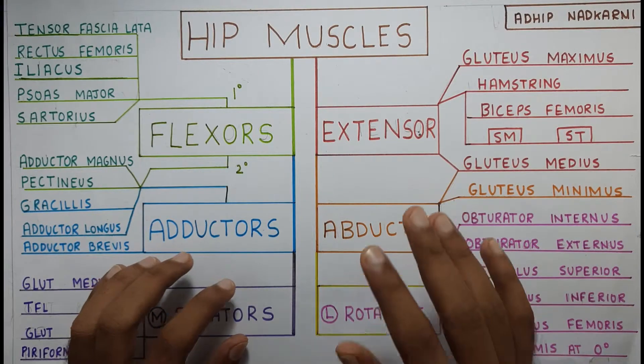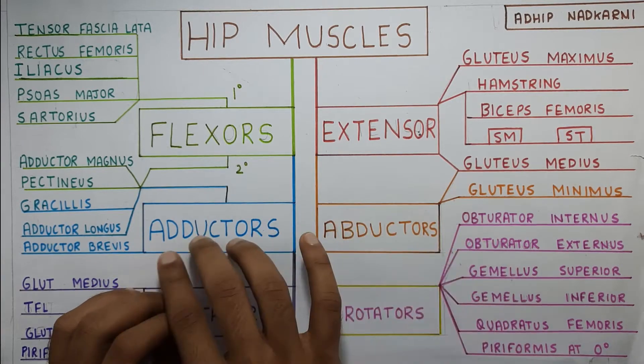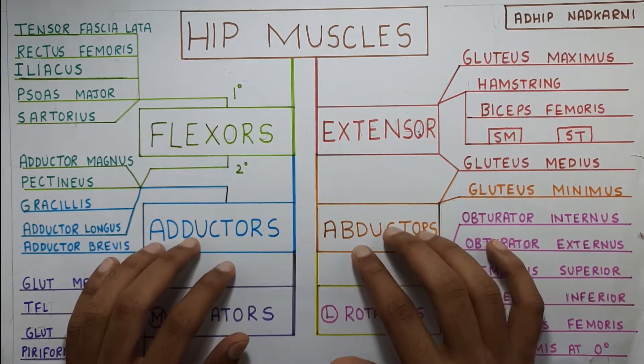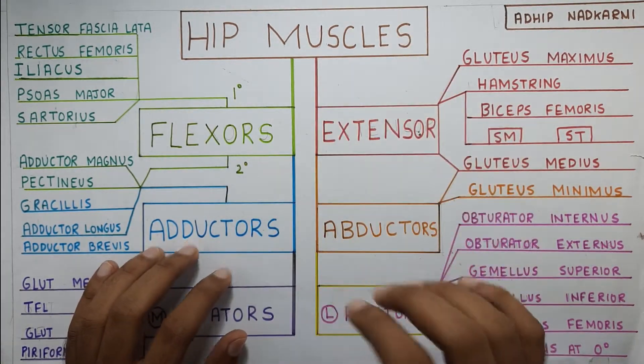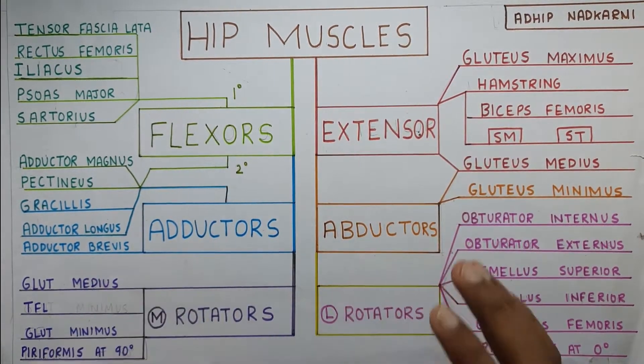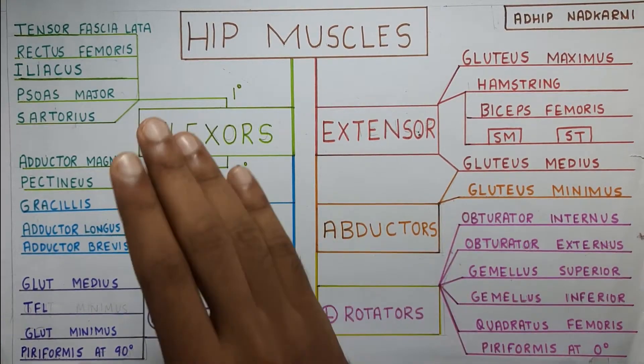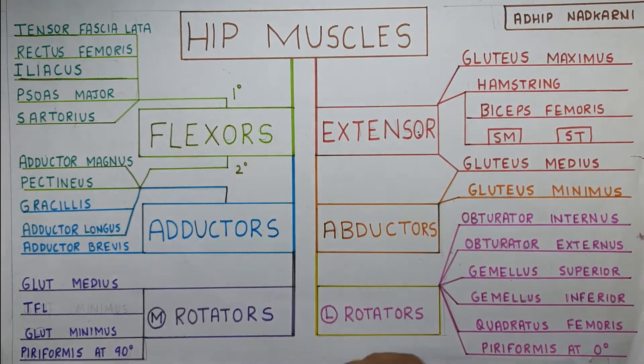In this video, we are going to talk about the adductors and abductors of the hip joint. The last video was about the flexors, so let's start with the adductors first.